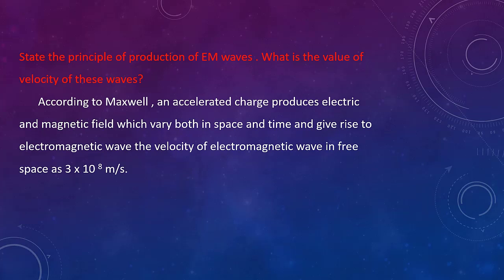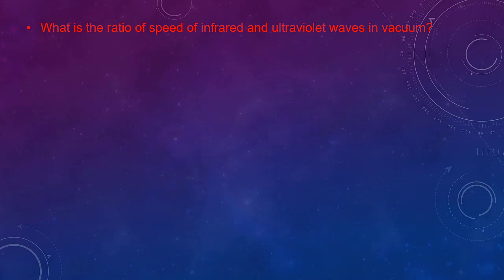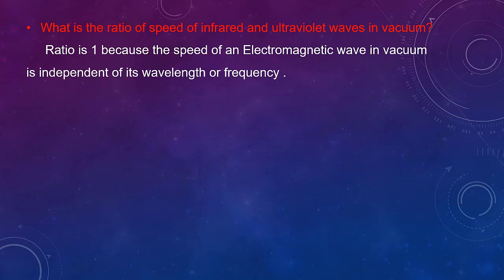Even if the frequency and wavelength vary for each wave in the electromagnetic spectrum, the velocity remains the same. Next question: what is the ratio of speed of infrared and ultraviolet waves in vacuum? The ratio equals 1 because the speed of electromagnetic waves in vacuum is independent of wavelength or frequency.